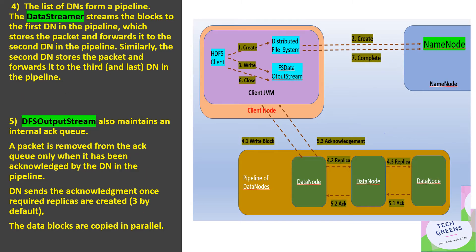When data is already written on the first DataNode, a pipeline is created between the next available DataNodes to create the replica of the block on the other DataNodes. This phenomenon is called pipelining of DataNodes — the data streamer doesn't write on the other DataNodes directly. Instead, one DataNode will forward the block to the next DataNode, and similarly the next DataNode will send it to the third DataNode. If the replication factor is three, we have three replicas across three DataNodes.